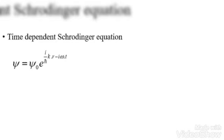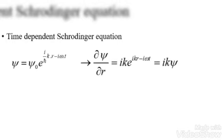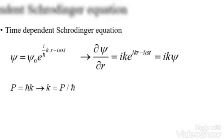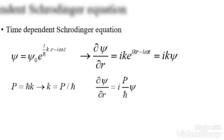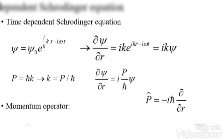Now let's talk about the time-dependent Schrödinger equation. To do that, we start with the derivatives of the wave function with respect to displacement, as you can see here. De Broglie's equation is used in order to rewrite the derivative of the wave function, and the result is the momentum operator in quantum mechanics.